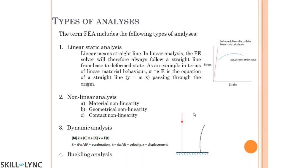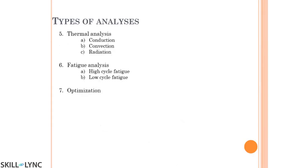Buckling analysis addresses scenarios where a structure can fail even without reaching the yield stress or tensile strength. The structure itself fails before reaching the material strength. For example, a long slender column compressed from the top can deflect sideways — if held perpendicular, stiffness resists bending. Buckling analysis is used to determine whether long columns will fail under a buckling load, and to find the factor of safety against buckling failure.